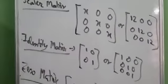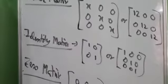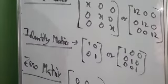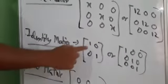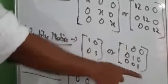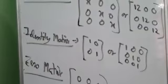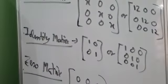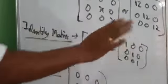Now, Identity Matrix. For a matrix to be identity, all the diagonal elements should be 1.